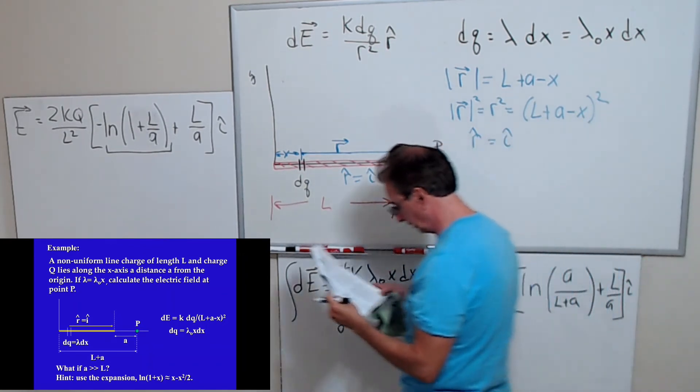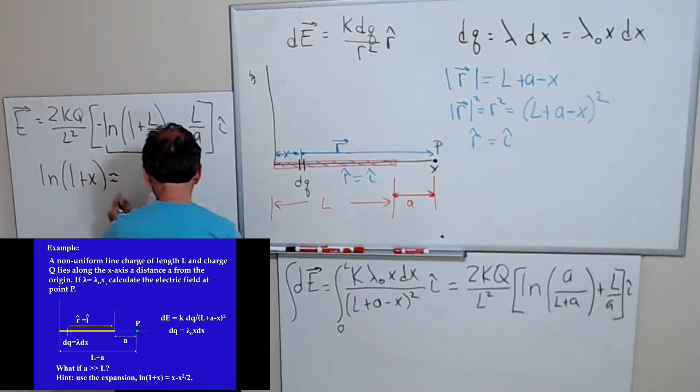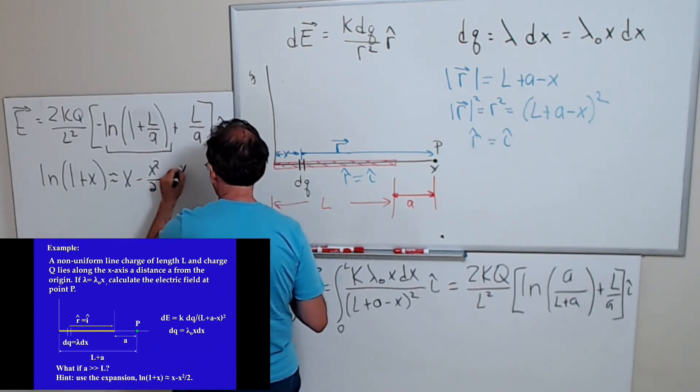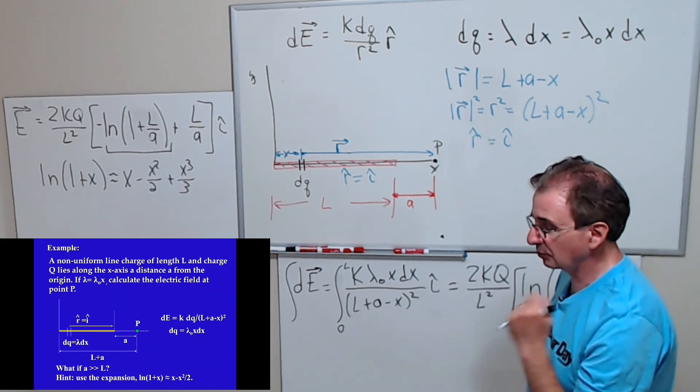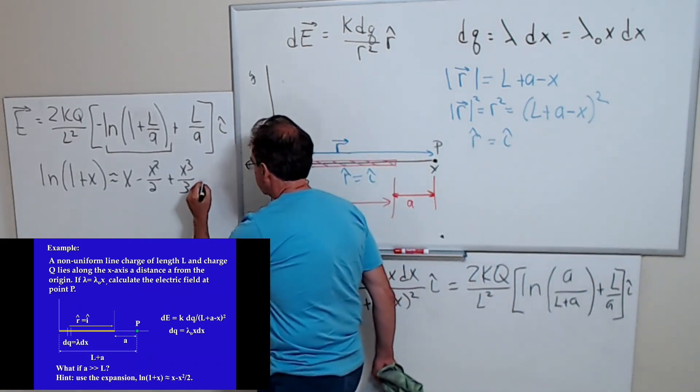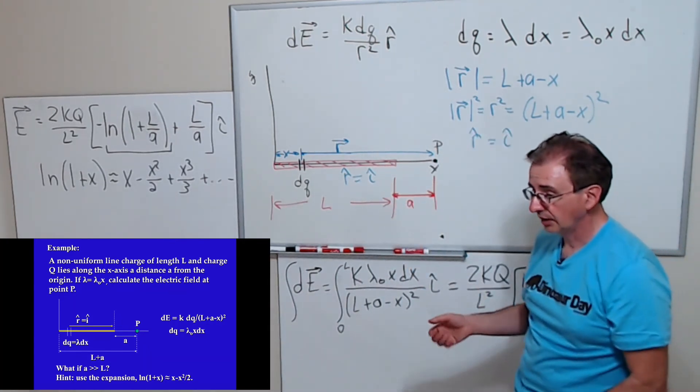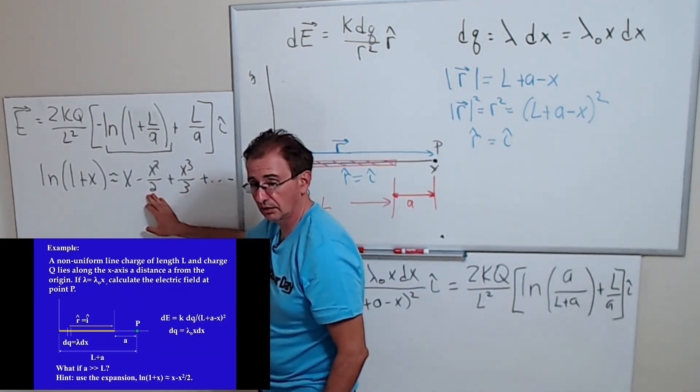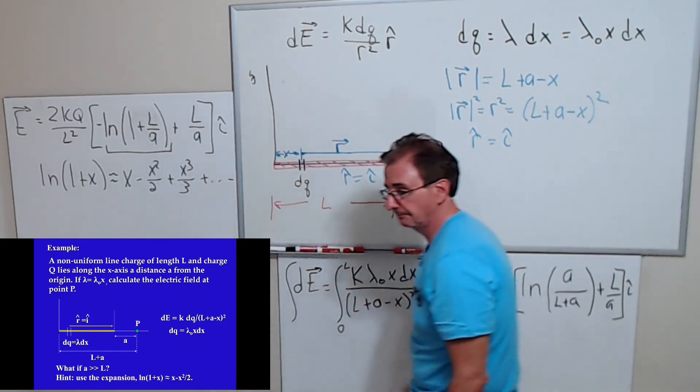So what I'm going to do is I'm going to use an approximation to this natural log. You've learned this in Calculus 2, that you can write a Taylor expansion. If you expand natural log of 1 plus x, where x is a number less than 1, you get this function or series. We will keep the second term in this series. We'll only expand up to here. This term is going to be really small, so we'll expand the expression to the second term.